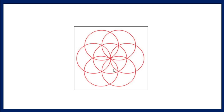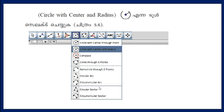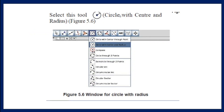The other way is to use 'Circle with Center and Radius.' That is the second option — the circle with center and radius. Select this tool: circle with center and radius.